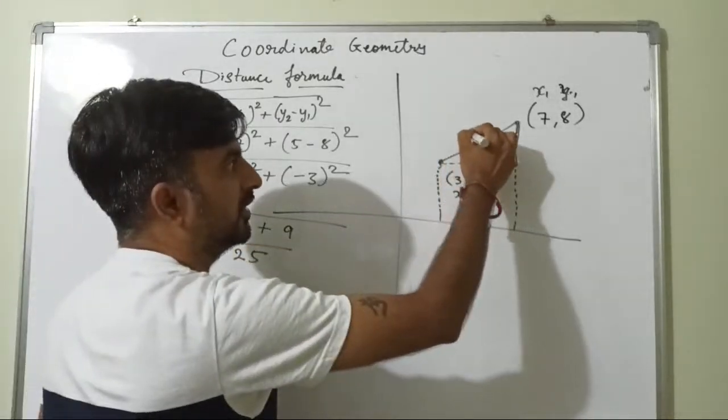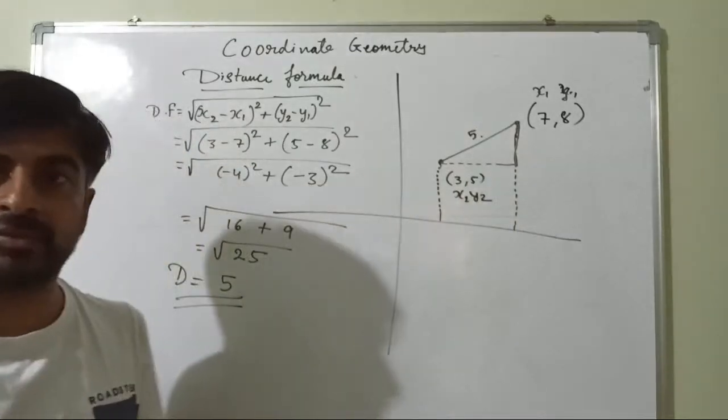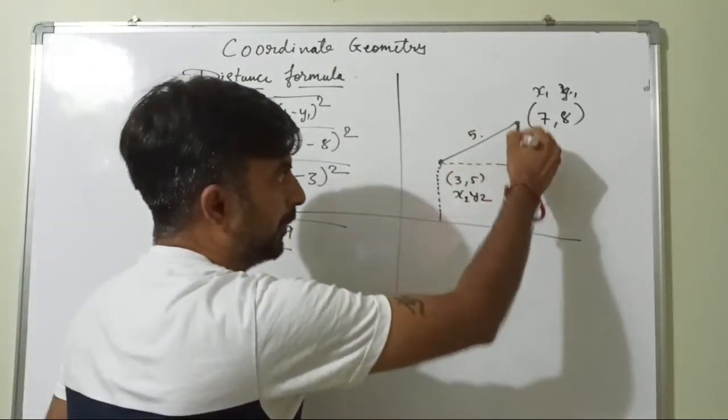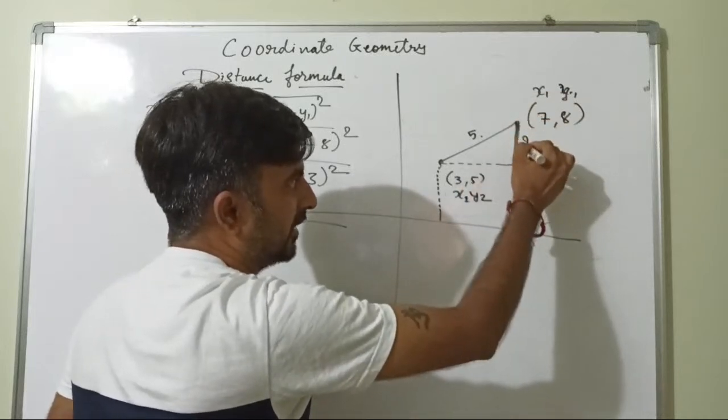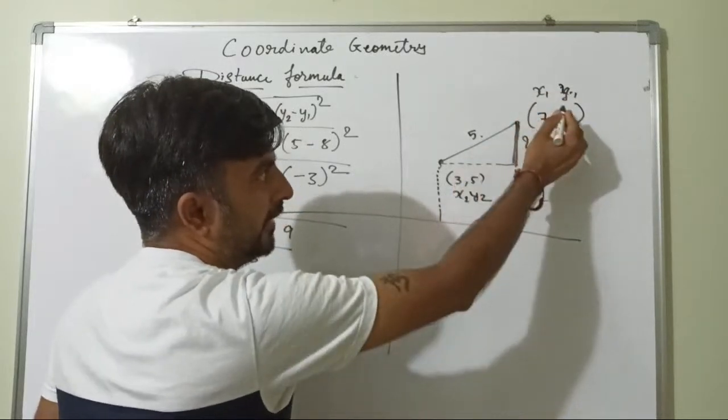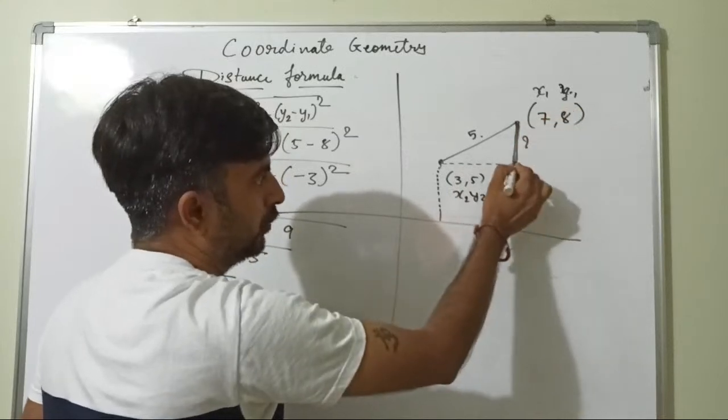So the distance between this coordinate is 5. Actually this is Pythagoras only guys. How? If you will subtract x1 minus x2 or x2 minus x1 you will get this distance. And then y2 minus y1 or y1 minus y2 you will get this distance.